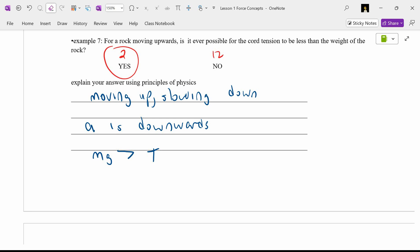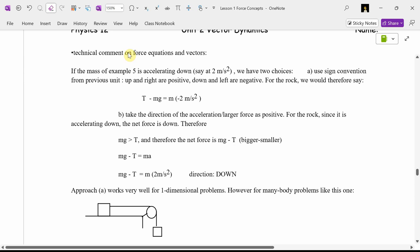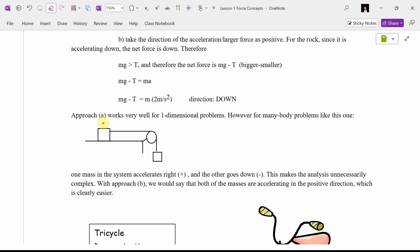So all three of those are possible. The most common, sure, tension is bigger than Mg, but constant velocity or slowing down. All three of those occur in an elevator, by the way, because the elevator initially starts accelerating up. Tension's bigger. Hits a constant speed pretty quick. Forces are balanced. Slows down when you approach the next floor. Mg's bigger. Technical comment on equations and vectors. If the mass of example five is accelerating down, we have two choices. We can let down be negative and up be positive. But that becomes cumbersome. It works okay for single masses, but in a situation like this, where you have one object accelerating to the right, positive, and one object accelerating down negative, it's going to get confusing. So what we're going to do is we're going to let whatever way we're accelerating be the positive direction.